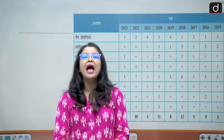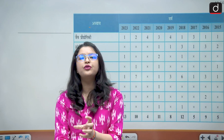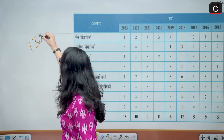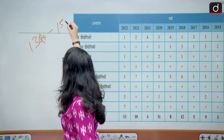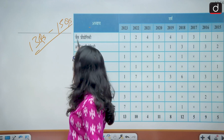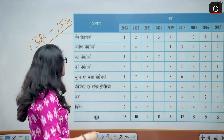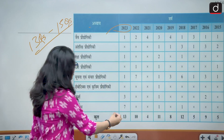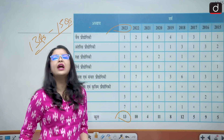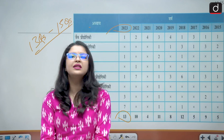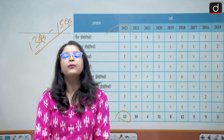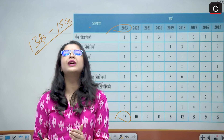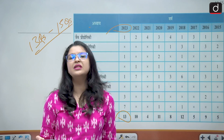Let us begin by discussing the important areas from which questions are asked in science and technology. If I talk about the average questions you can expect from this subject, they can range anywhere between 13 to 15 questions. In the last prelims of 2023, around 13 questions were asked from various areas in science and technology.